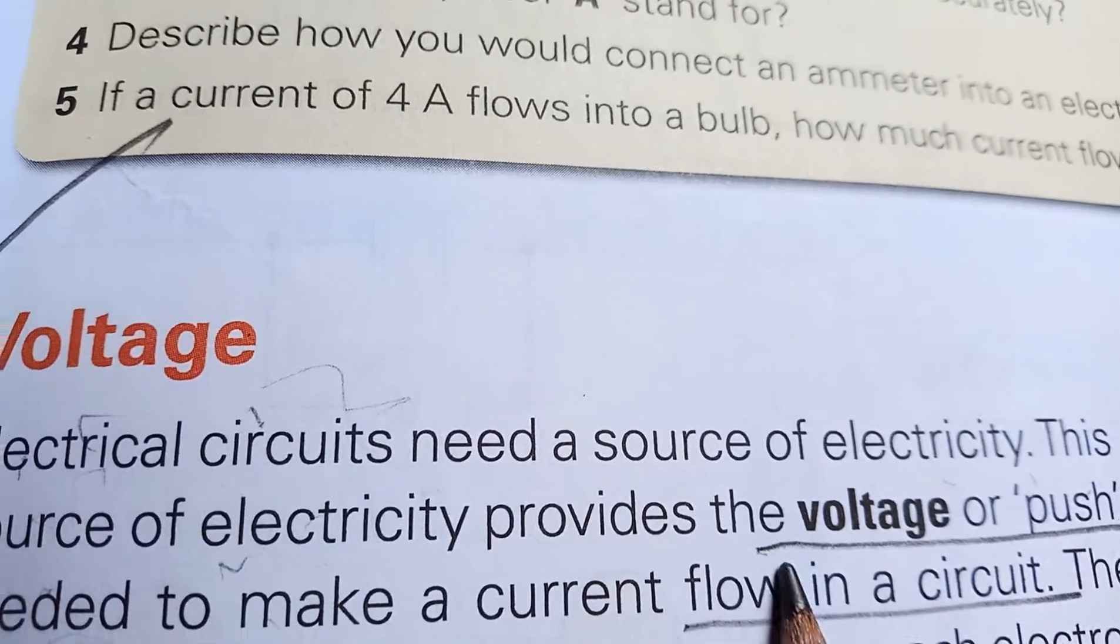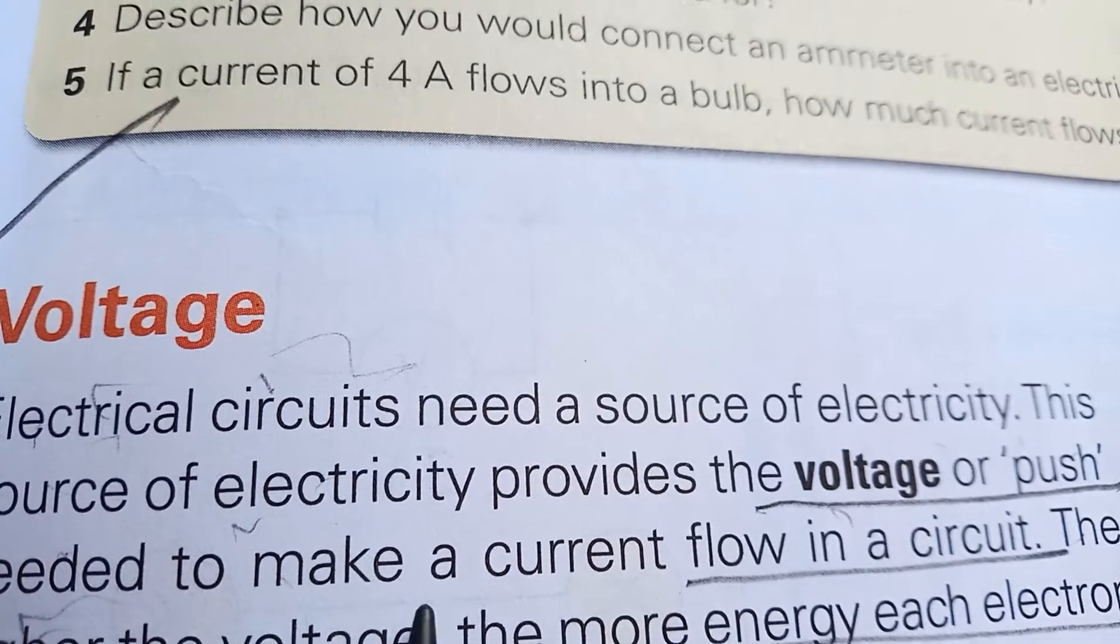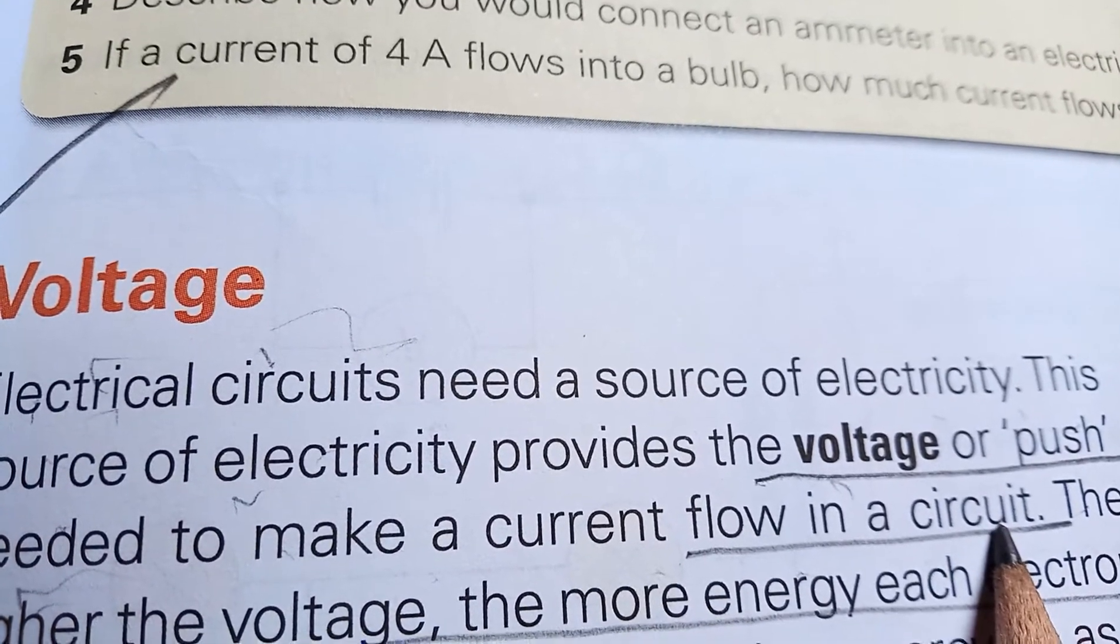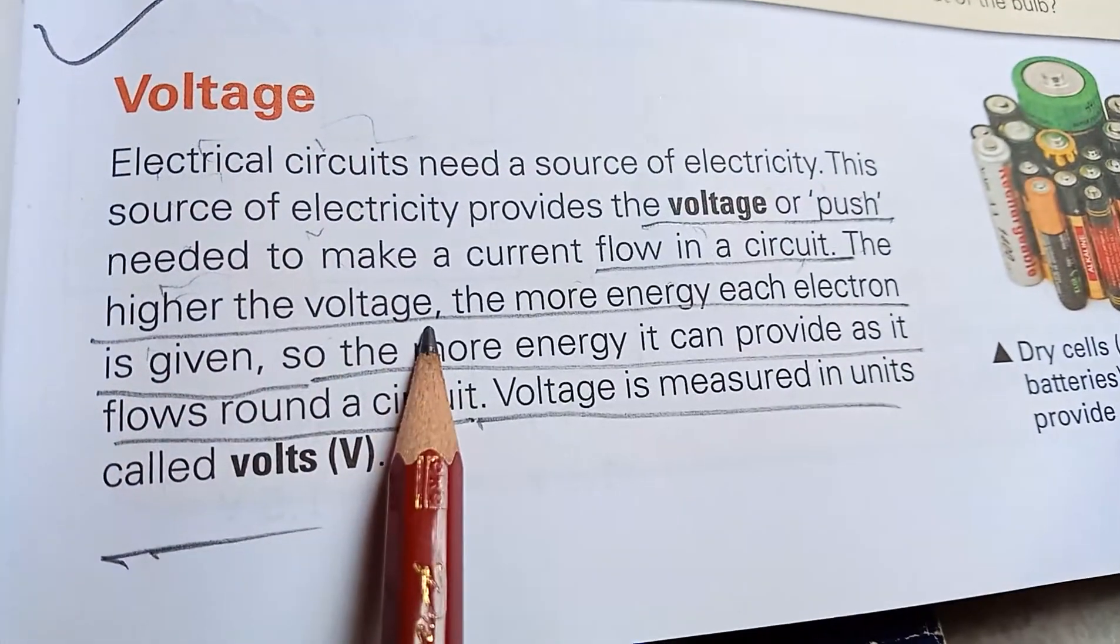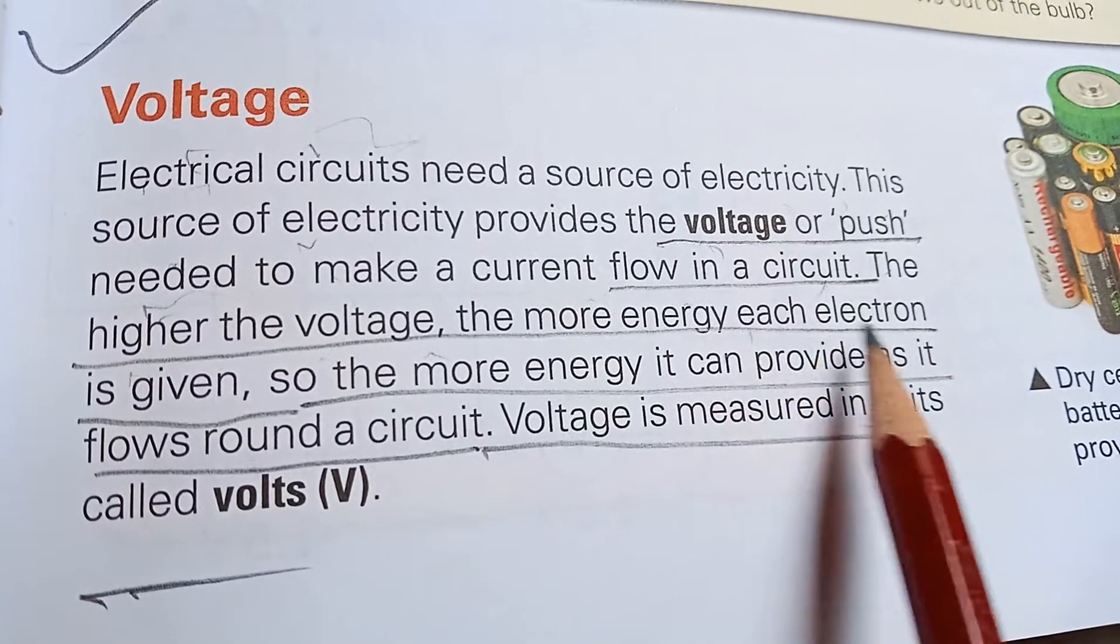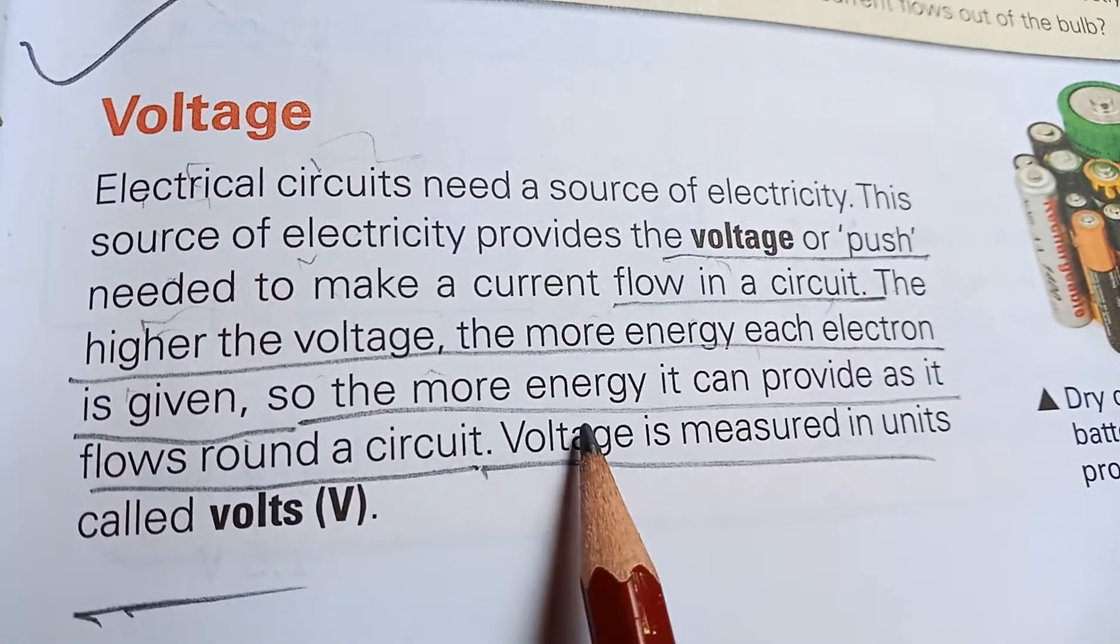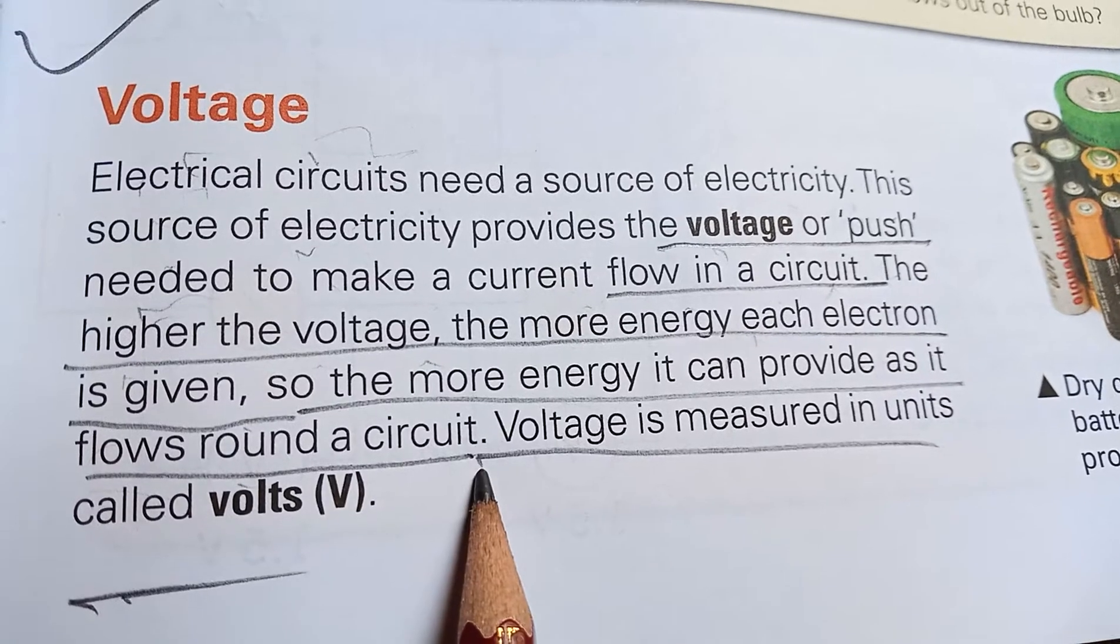This source of electricity provides the voltage or push needed to make a current flow in a circuit. The higher the voltage, the more energy each electron is given, so the more energy it can provide as it flows around the circuit.